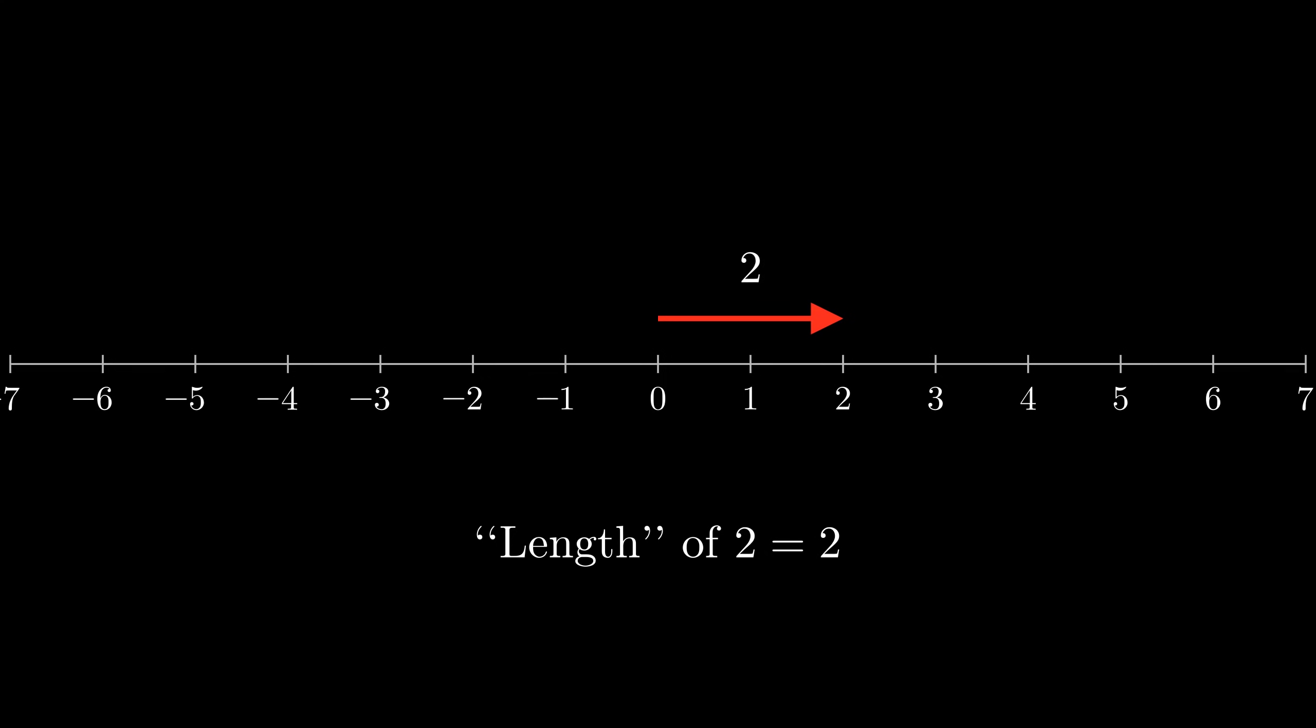For example, the length of 4 is 4. But what about the length of a negative number, like negative 3? Well, the length of the vector going from 0 to negative 3 is 3, so the length of negative 3 is 3. In general, we see that the length of any positive number is that number, and the length of any negative number is the positive version of that number.